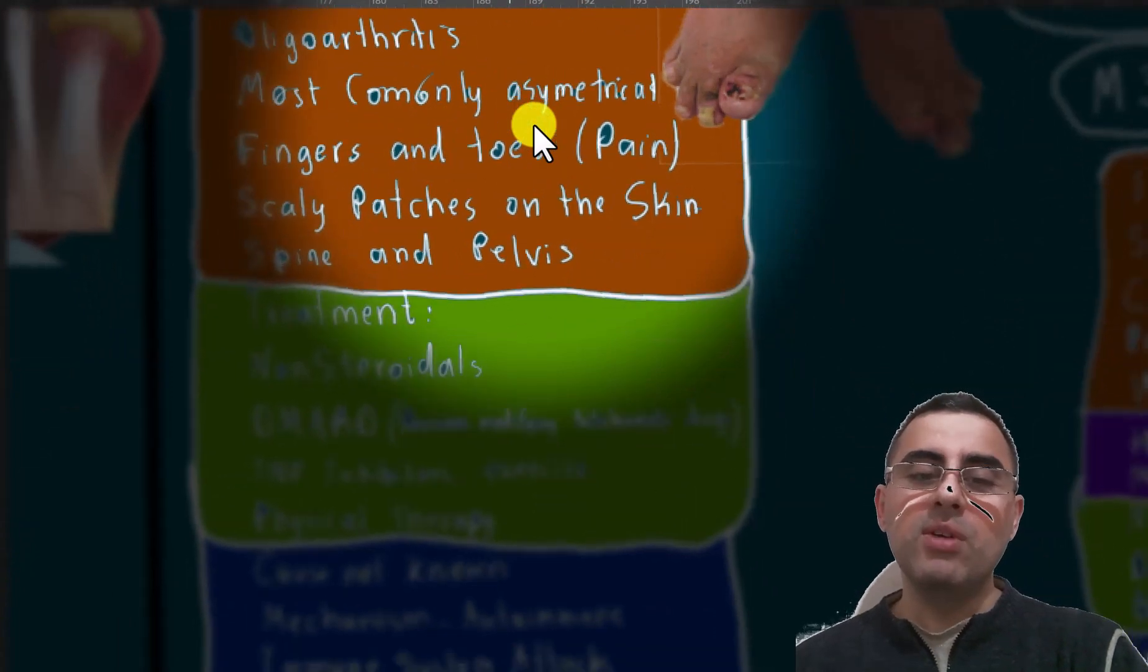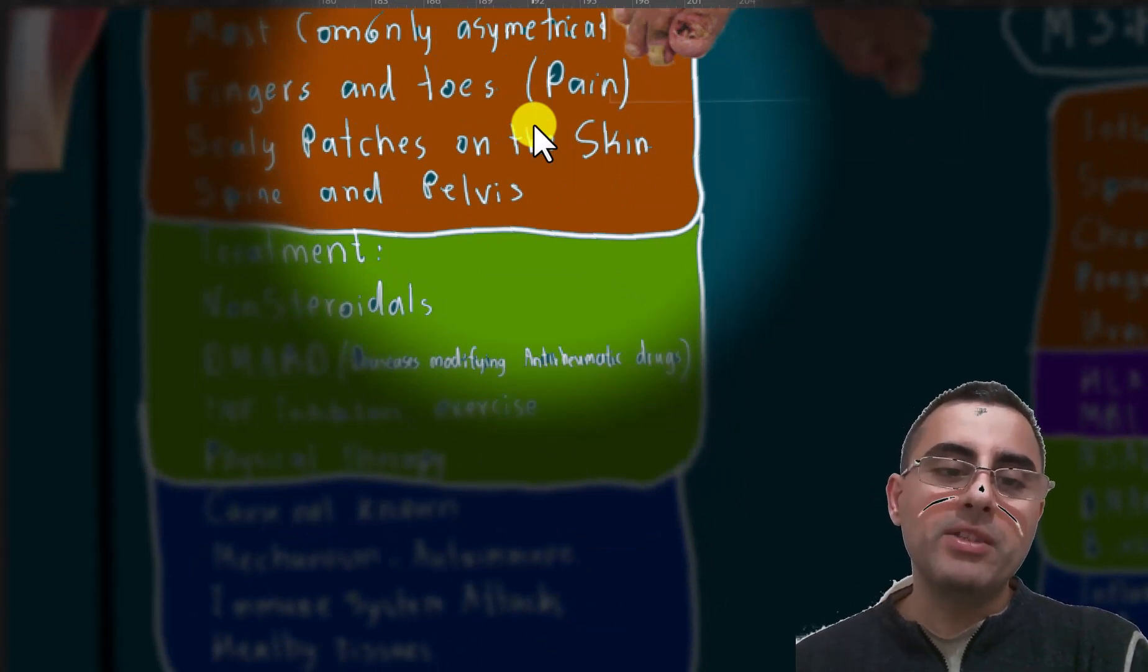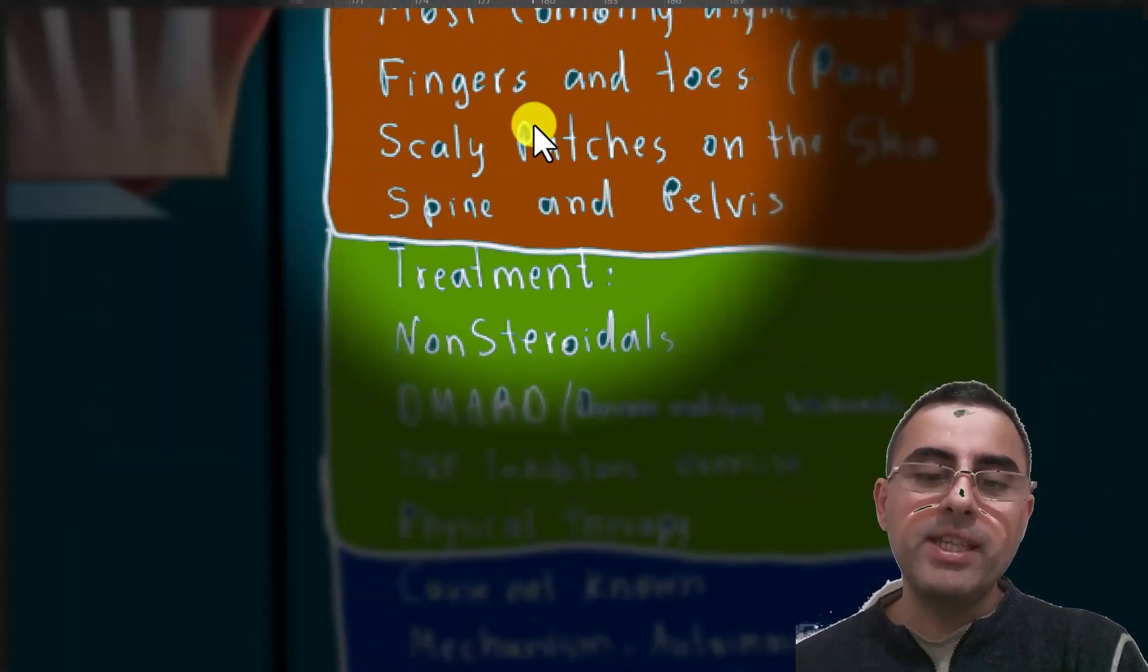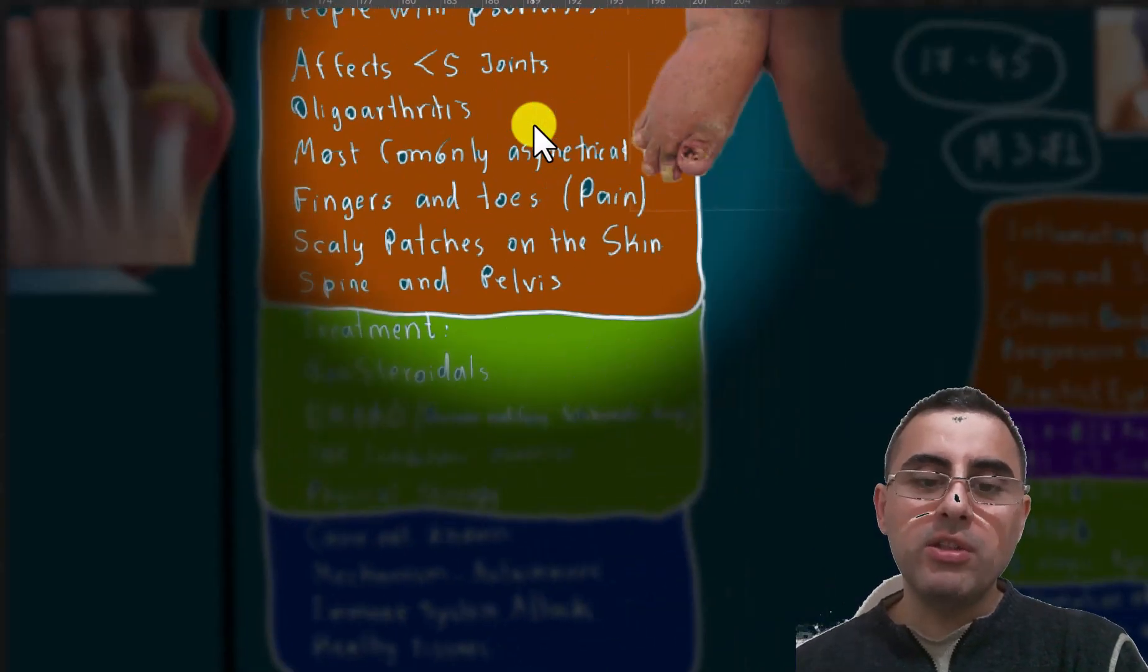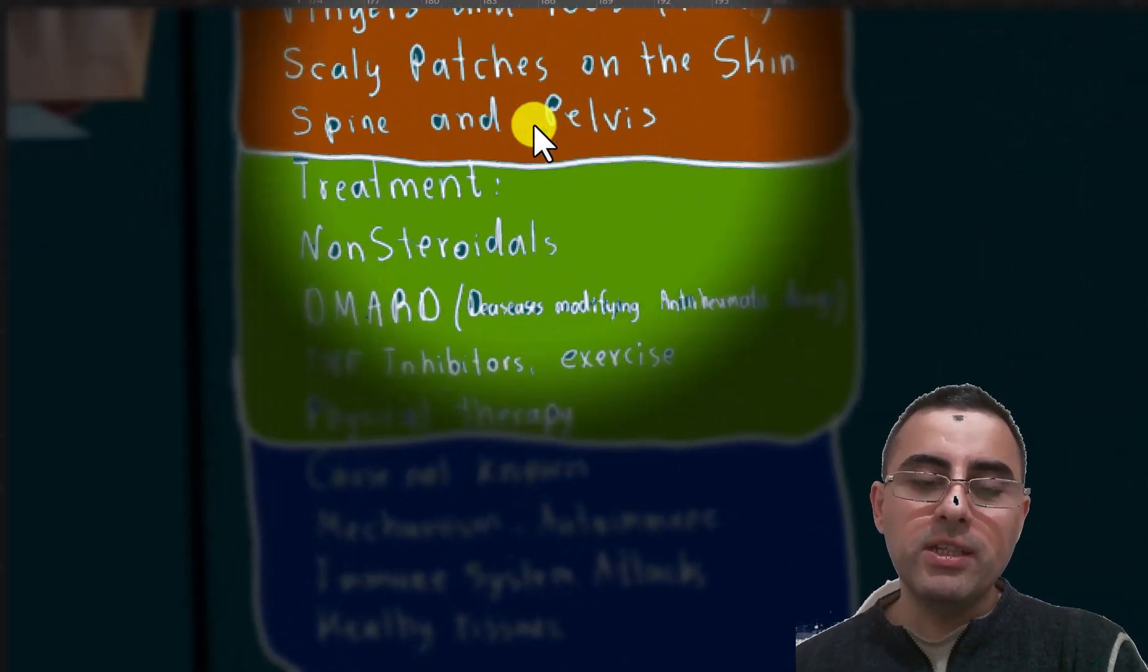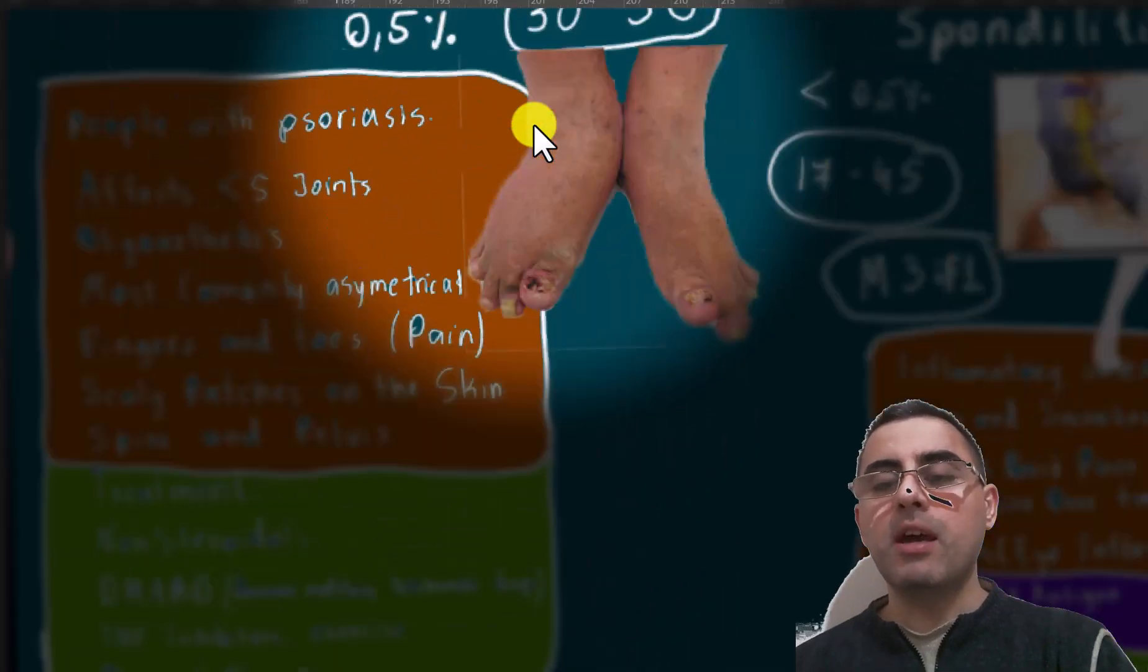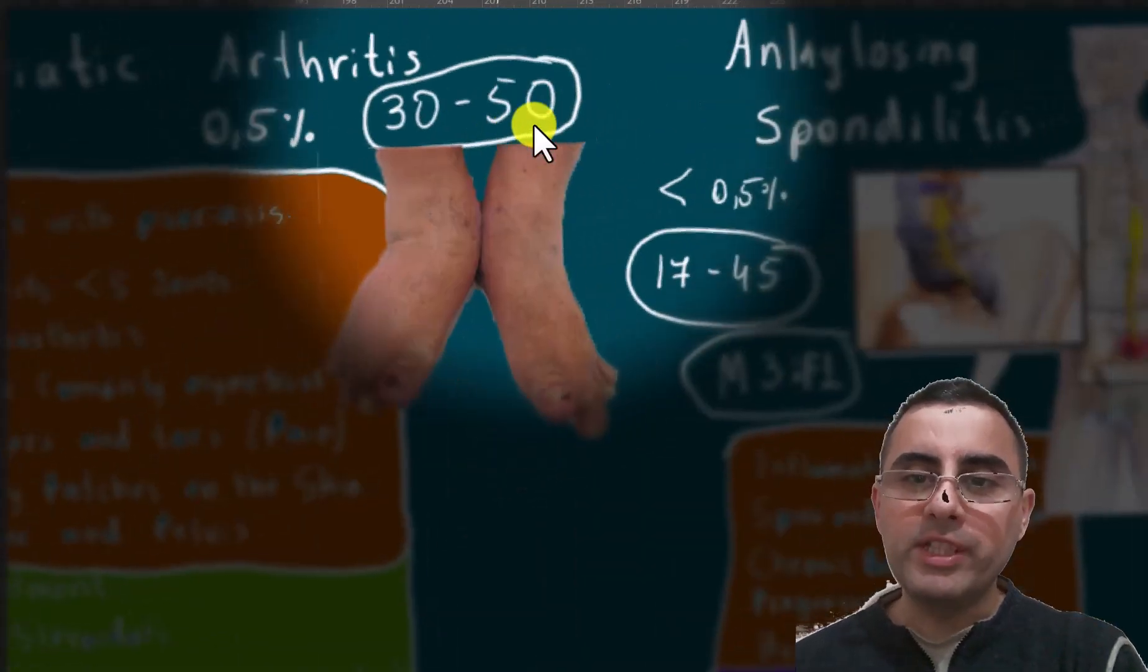In case of psoriatic arthritis, a patient usually has psoriasis, so it's easy to diagnose. Sometimes spine and pelvis can be included also. Treatment is non-steroidal, DMARDs, and TNF inhibitors—tumor necrosis factor inhibitors—and physical therapy. The cause is psoriasis, and the cause of psoriasis has an autoimmune basis, which means our immune system attacks our own tissues.